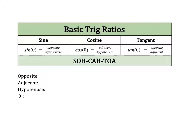The full version of the word is sine, but when we write it in an equation or look for it on a calculator, you'll see the abbreviation S-I-N. However, I still would like you to read it as sine — never read it as sin. For cosine, the full word is cosine and the abbreviation is C-O-S, but we still read it as cosine. And for tangent, the abbreviation is T-A-N.